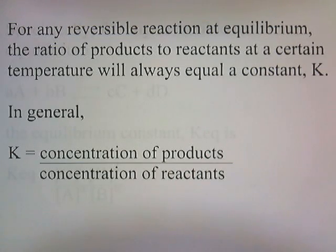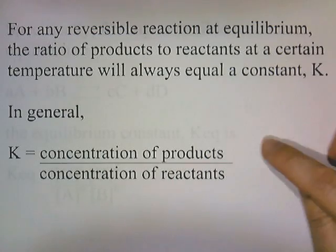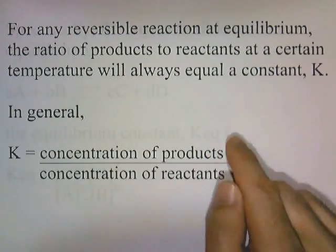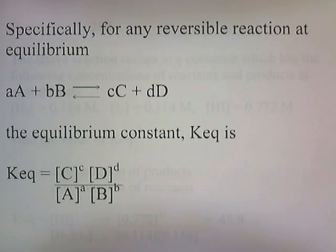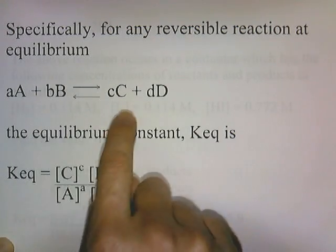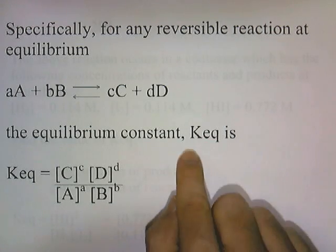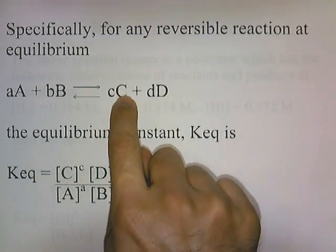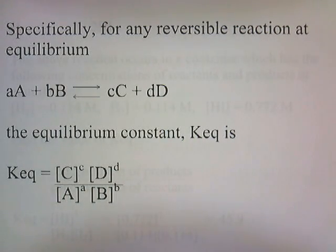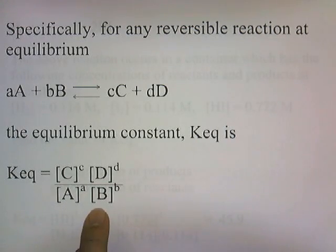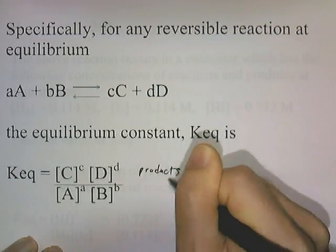For any reversible reaction at equilibrium, the ratio of products to reactants at a certain temperature will always equal a constant K. K is equal to the concentration of products on top divided by the concentration of reactants on the bottom. More specifically, for a general reaction aA + bB ⇌ cC + dD, the equilibrium constant Keq equals the concentration of C raised to the power c, times the concentration of D raised to the power d, divided by the concentration of A raised to the power a, times the concentration of B raised to the power b — products on top, reactants on the bottom.